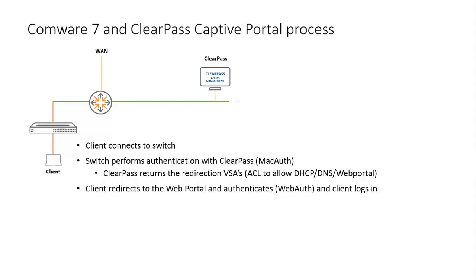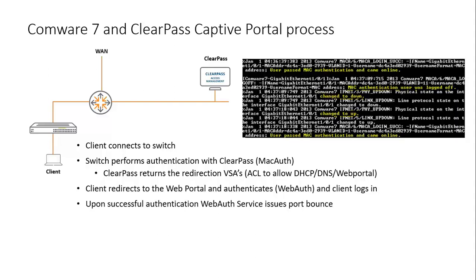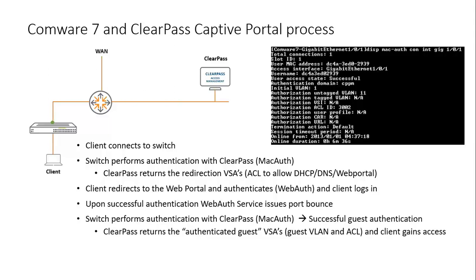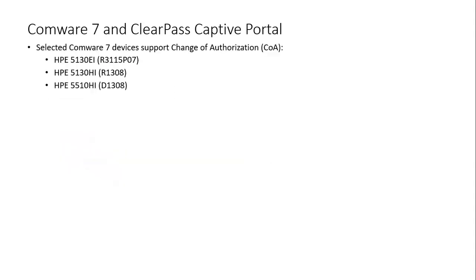The client will see a login screen for web authentication, and once the web authentication is successful, ClearPass will send another accept message to the switch, telling the switch to shut down the port and enable the port again, causing a new MAC authentication to take place. However, in the second MAC authentication, ClearPass will know that the user has authenticated and it will push a different set of VSAs to the switch, causing the client to get access to the granted network resources.